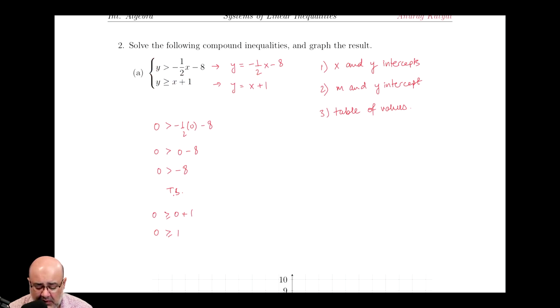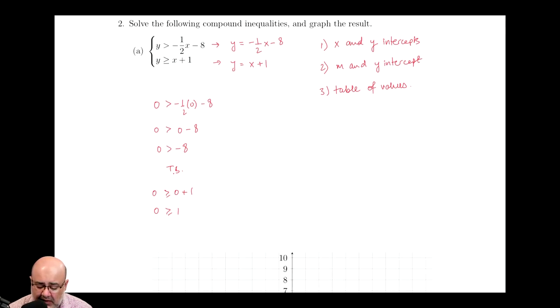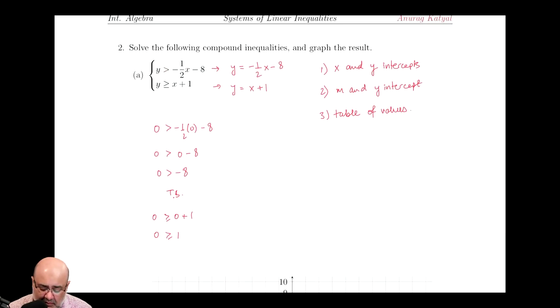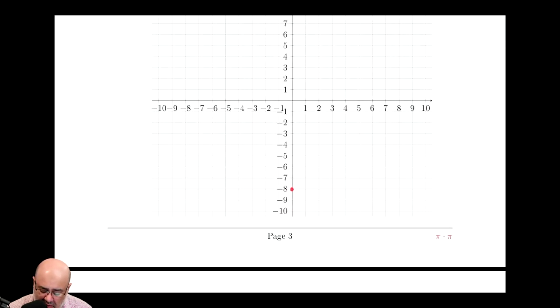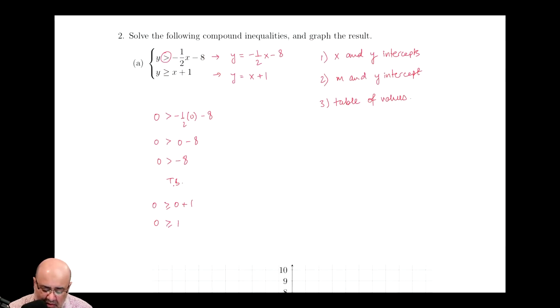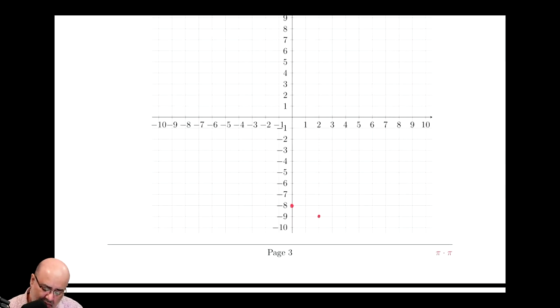So if we were to graph y equals negative one-half x minus eight, that's the first equation, we start with a y-intercept of negative eight, which is down here, and then I have a slope of negative one-half. So that means I go down one and to the right two, and then if I connect these two with a dashed line, because it's just greater than, my line will look like so.